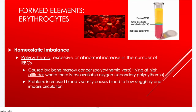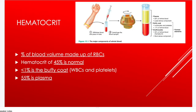Polycythemia is the opposite — too many red blood cells. It can be caused by polycythemia vera, a form of bone marrow cancer that overproduces red blood cells. Living at high altitude can cause secondary polycythemia, as the body compensates for reduced available oxygen. Having too many red blood cells increases blood viscosity, impairs circulation, makes the heart pump harder, and increases the risk of blood clots.